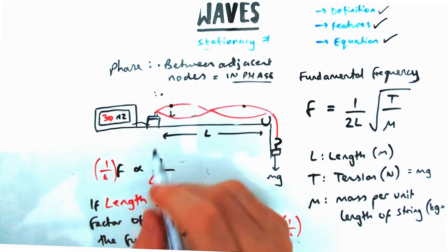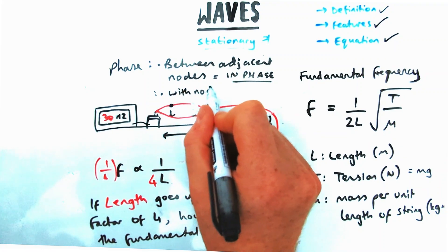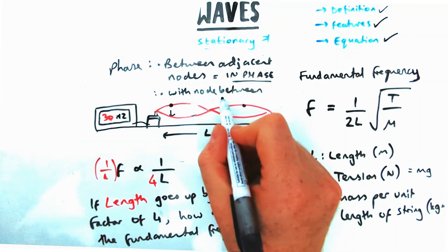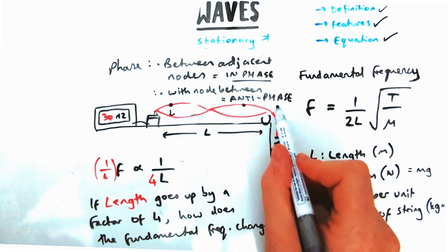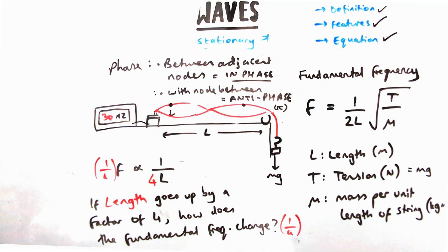If I've got two particles that have a node between them, then they are going to be in antiphase. That means there's pi radians or 180 degrees, and it means that one goes up, the other goes down exactly.